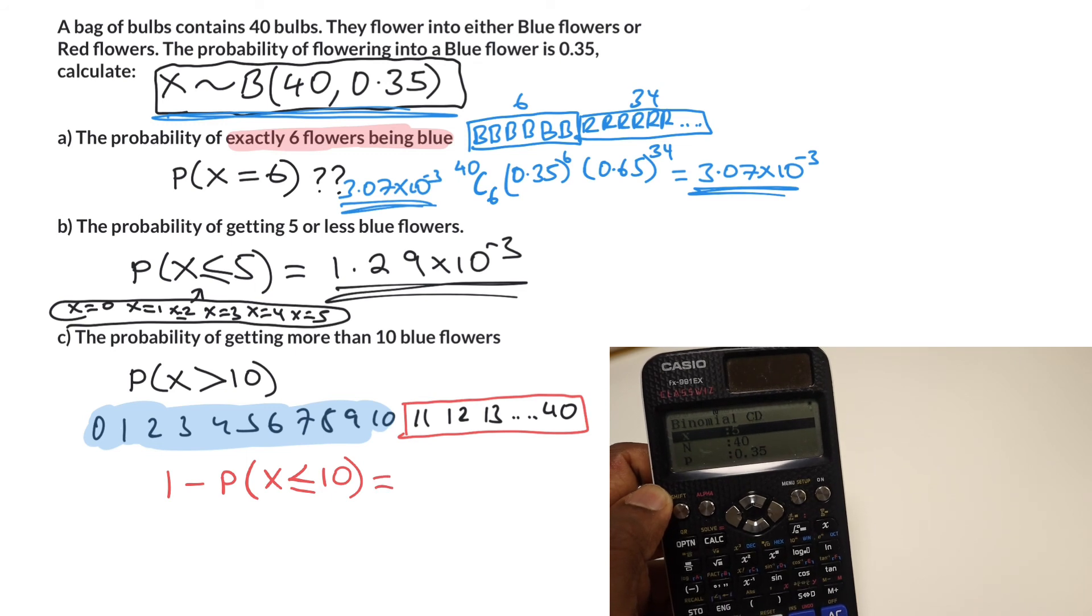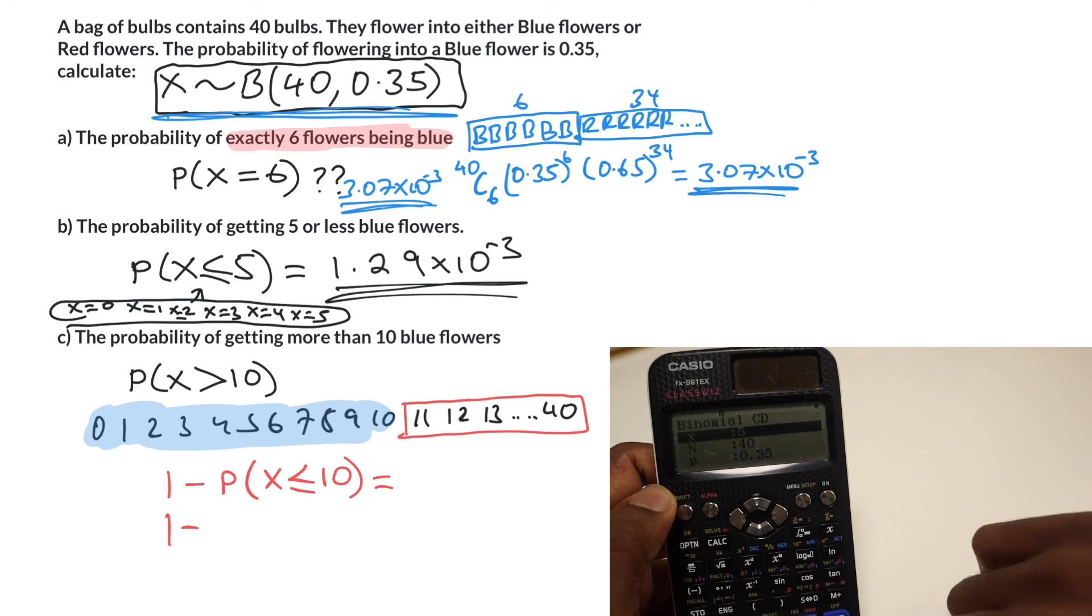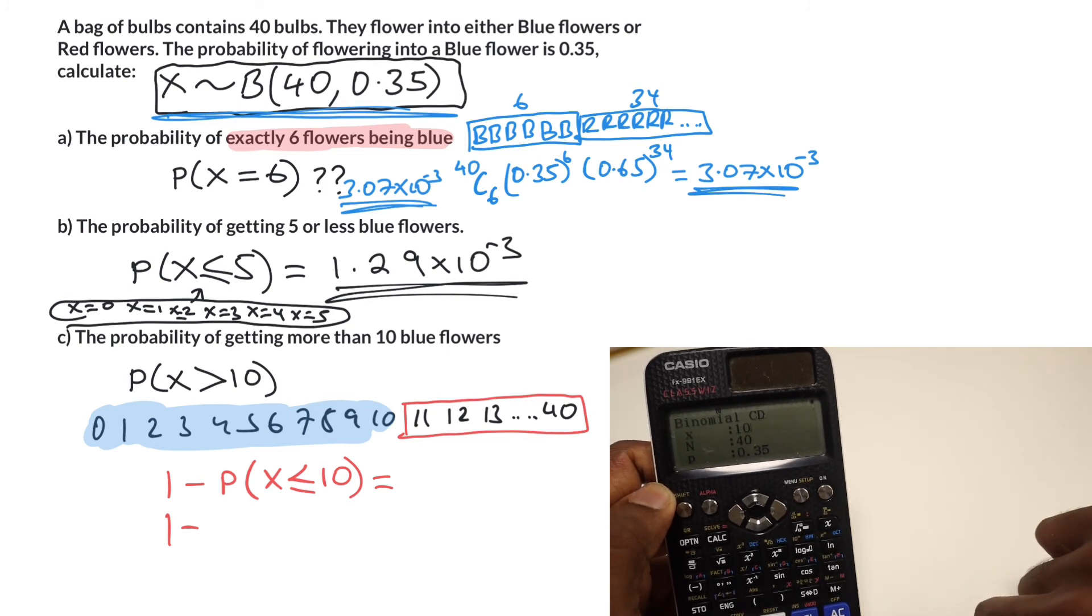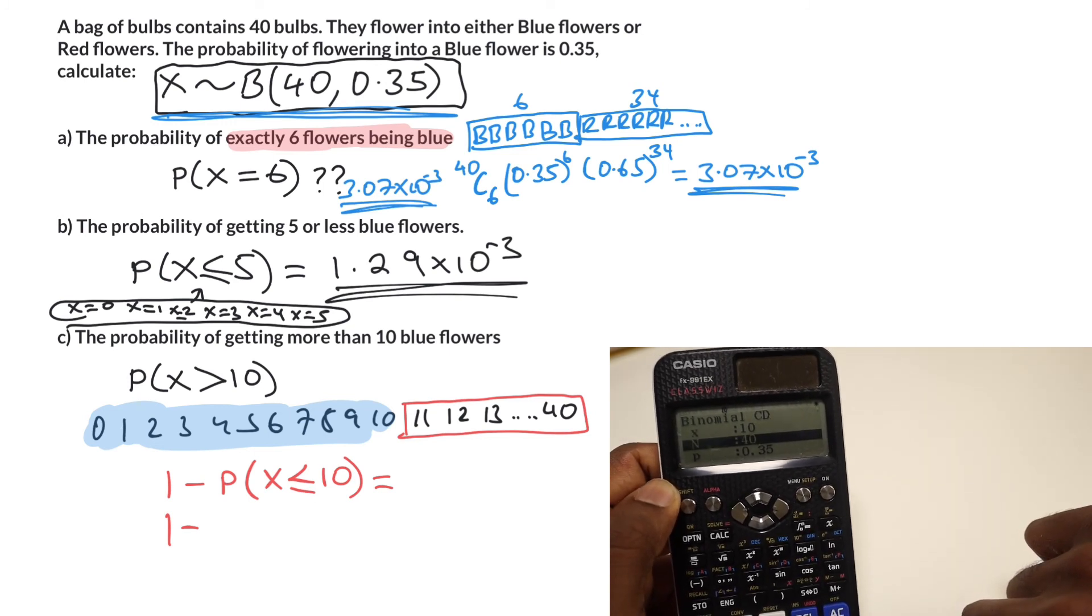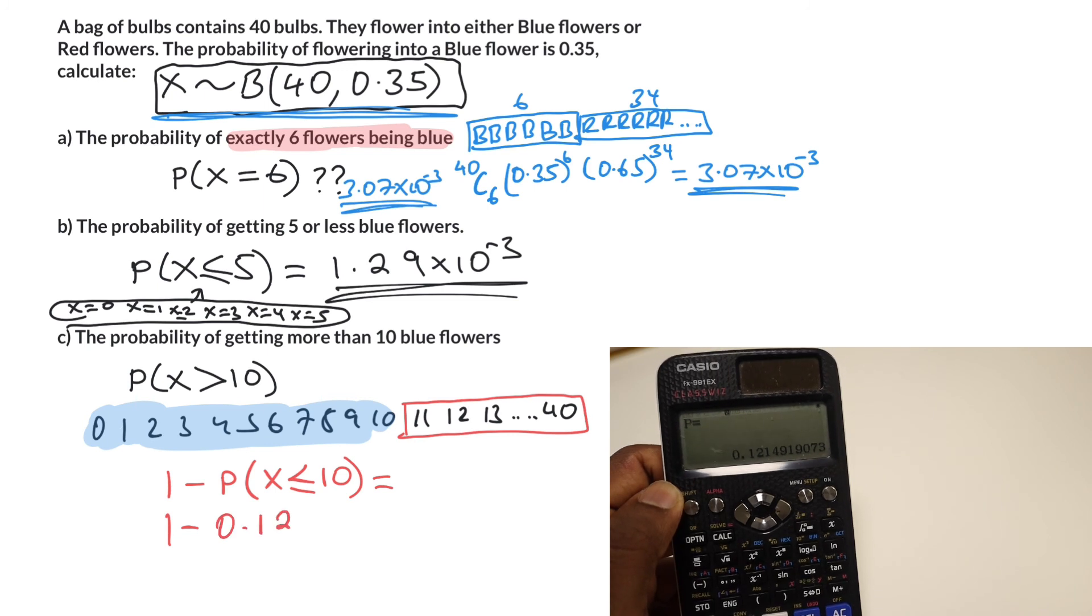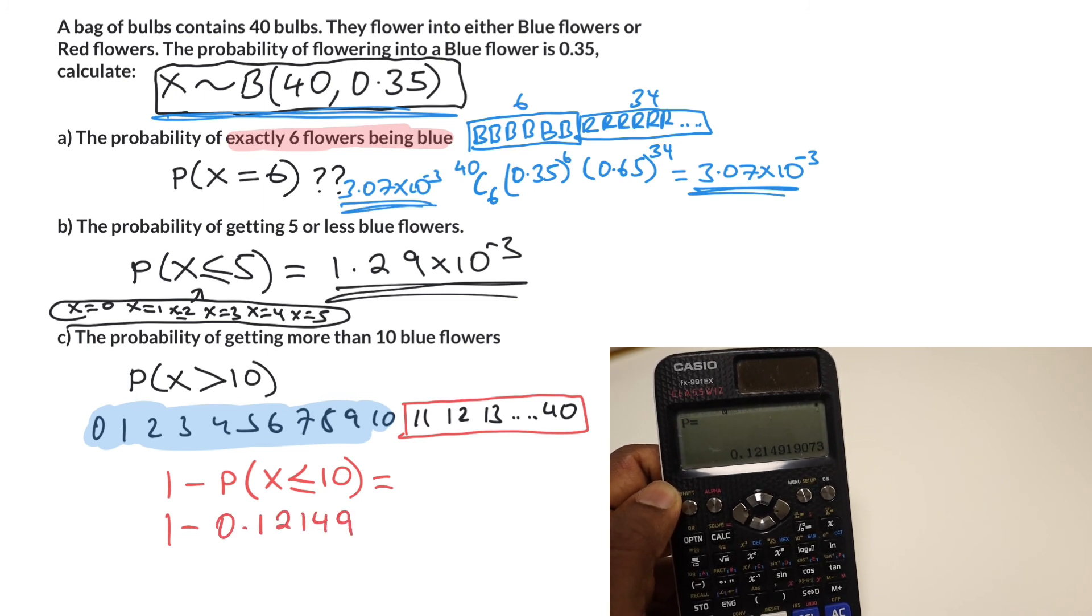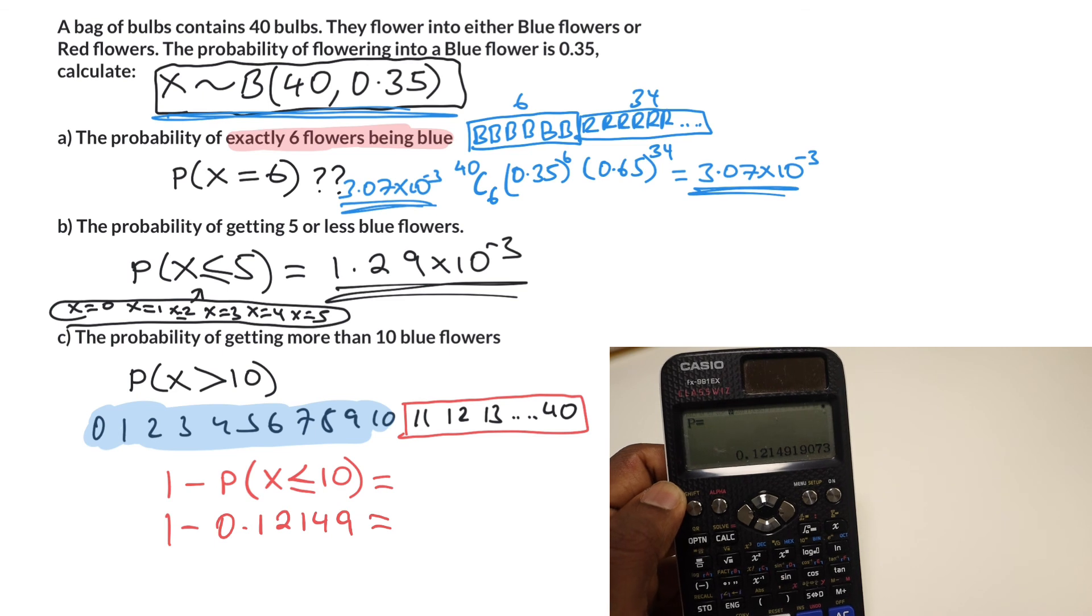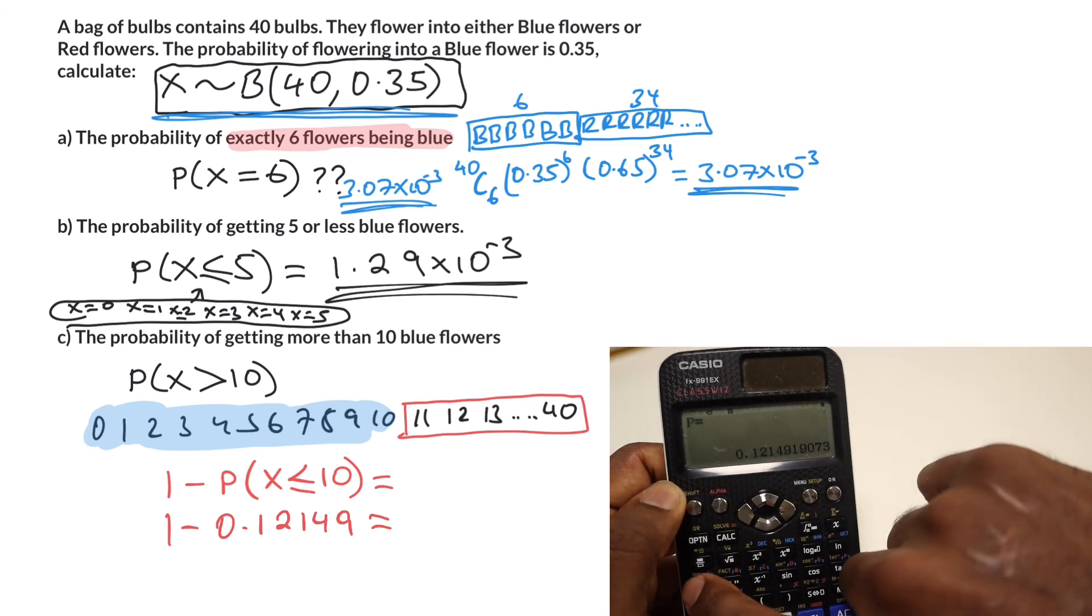Now in my calculator, all I need to do is work out this probability here. I can choose x here as 10, 40 stays the same, the probability stays the same. That value comes out as 0.12149. We just need to do 1 minus that, so I'm going to store that.